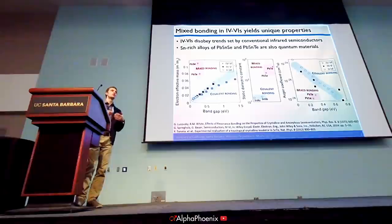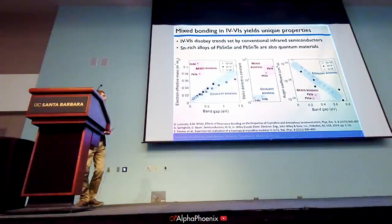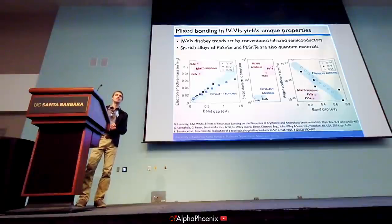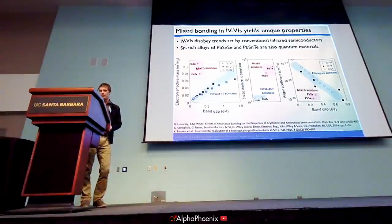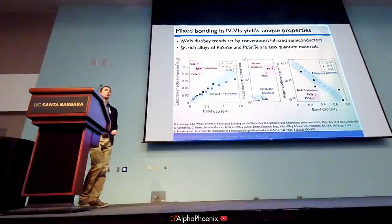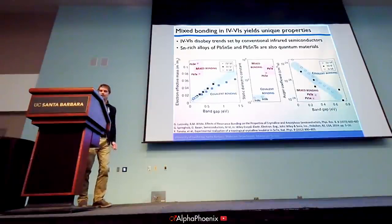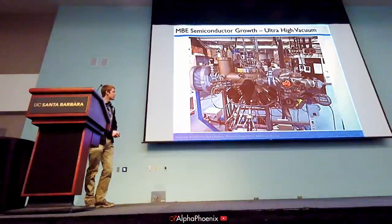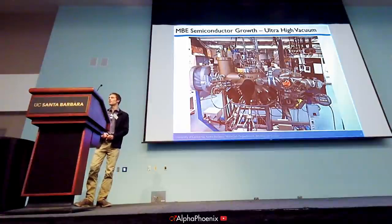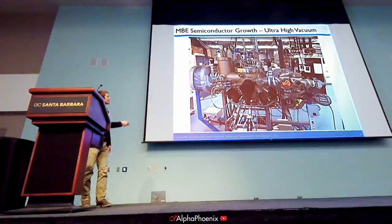At the same time, there's been a resurgence of interest in these materials recently, because tin-rich alloys of lead tin selenide and lead tin telluride are quantum materials being investigated for things like topological quantum computing, which got mentioned briefly in the Quantum Foundry talk yesterday. That's just another part of the promise of the 4-6 material system. But all of this depends on actually being able to grow high-quality films of the 4-6 materials, and we do that in the MBE.